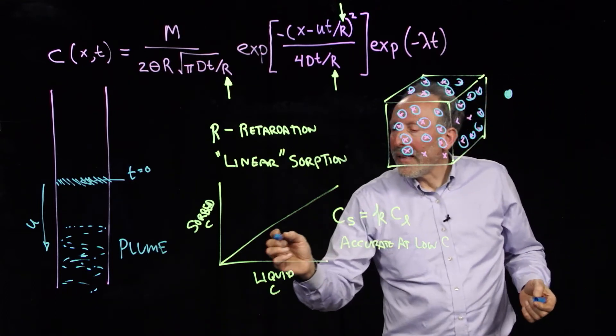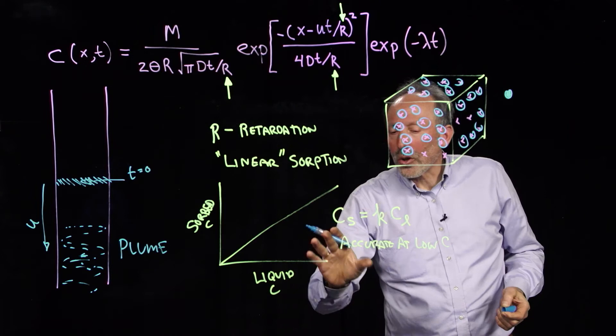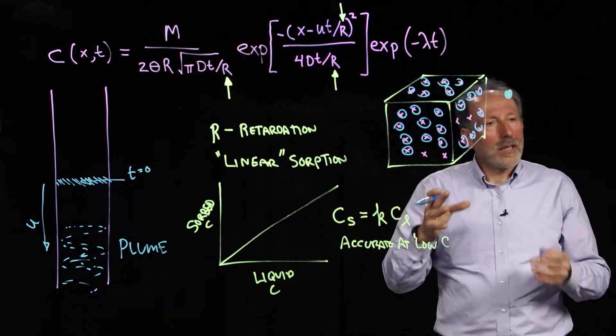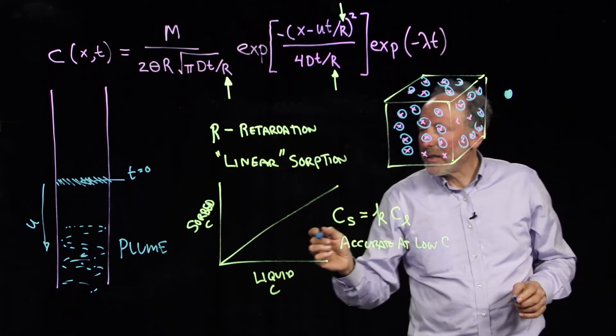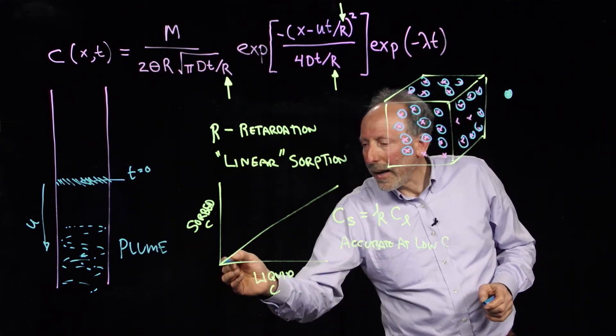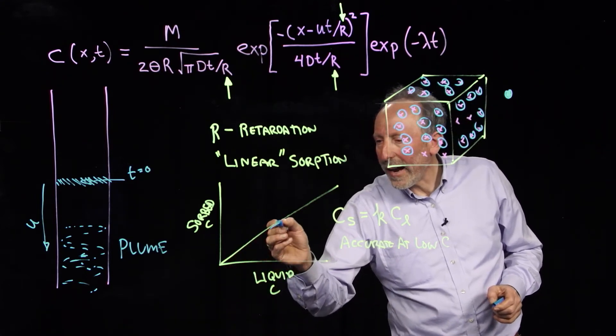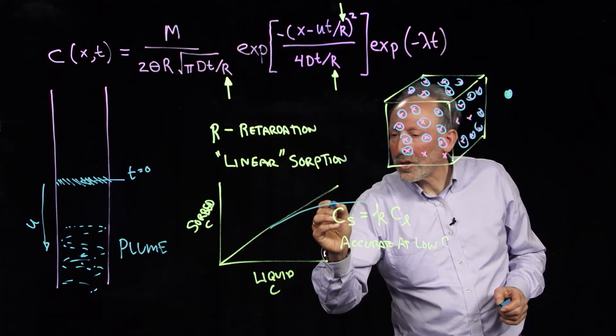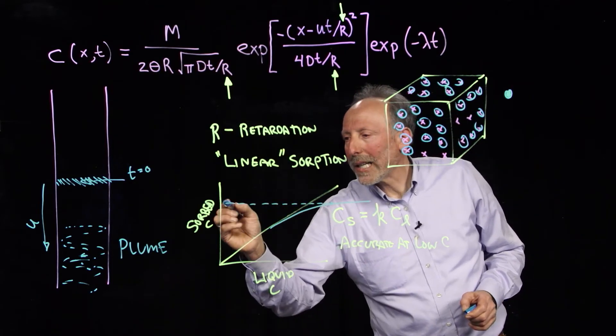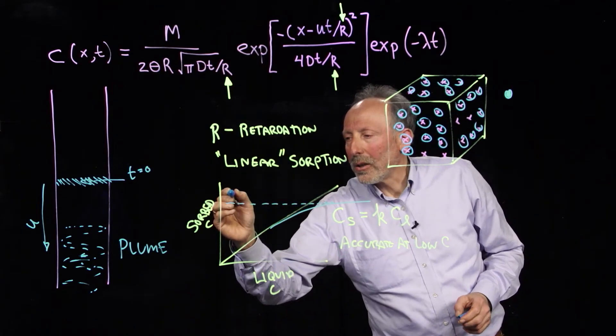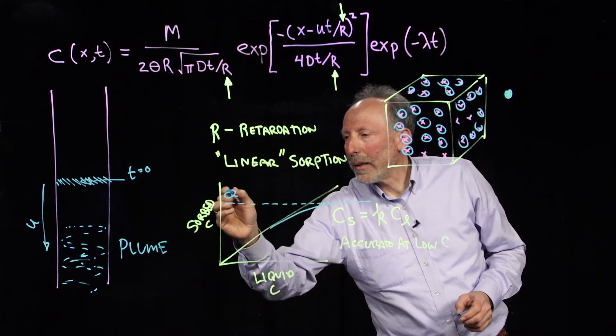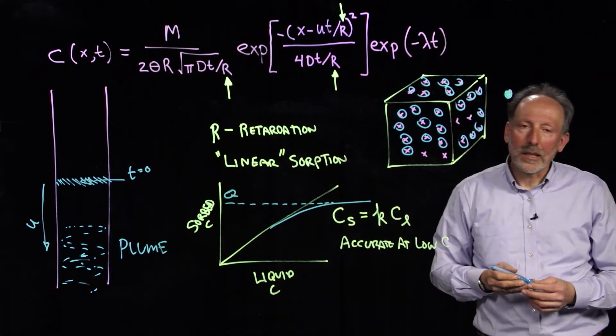So, what we see then is that linear sorption, where there's only a few sites, then the probability of new sorption is held constant. But, as we get the higher concentration, in fact, this curve goes to a maximum, which is the total, we can use a Q typically, is the total sorption capacity of that material.